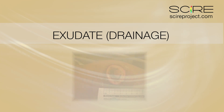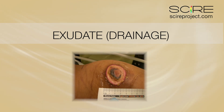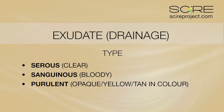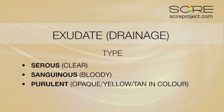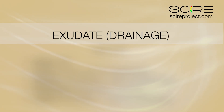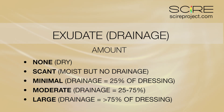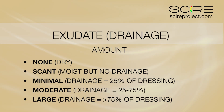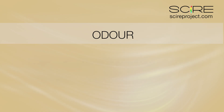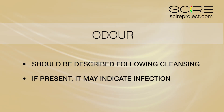Exudate or drainage is assessed for type and amount. Fluid may be serous or clear, sanguineous or bloody, or purulent — opaque, yellow, or tan in color. The amount of fluid is described as none if dry, scant if moist but no drainage, minimal, moderate, or large. The odor should be described following cleansing. If present, it may indicate infection.